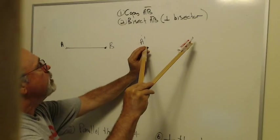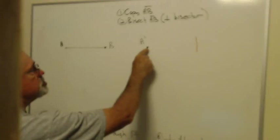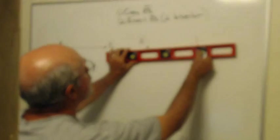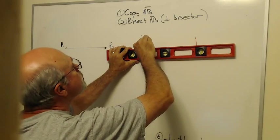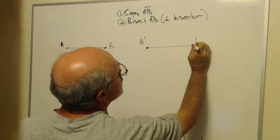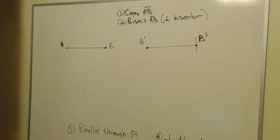All I have to do then is put the point on A prime and draw an arc out here. Every point on that arc is the same distance from A prime as A is from B. So if I take a straight edge and connect A prime to that red arc, call that point B prime. Now A prime B prime is the same length as AB. We've successfully copied a segment.